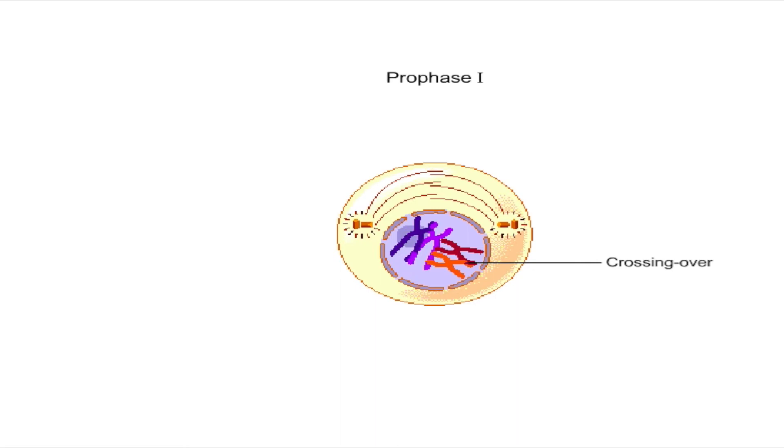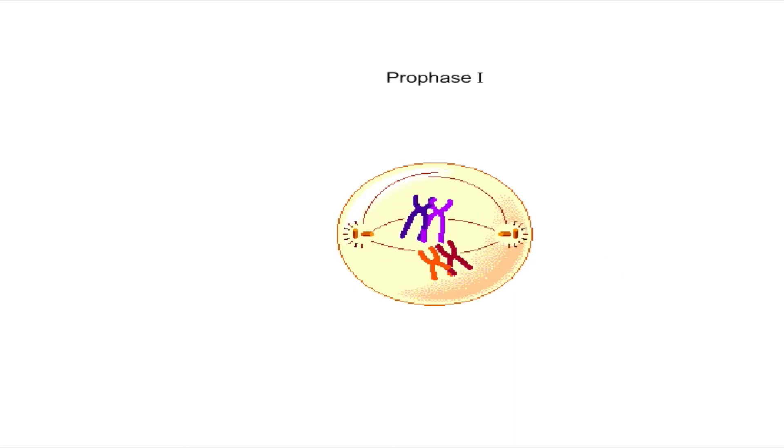The sites of crossing over are seen as crisscross chromatids and are called chiasmata (singular: chiasma). The nucleolus and nuclear envelope disappear in late prophase one, allowing the meiotic spindle to enter the nucleus. Prophase one is the longest phase of meiosis, typically consuming ninety percent of the time for the two divisions.